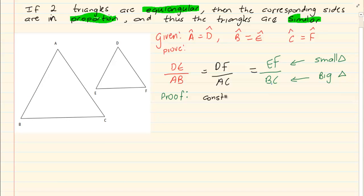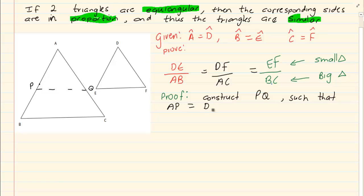How do we go about proving this? First you are going to construct line PQ such that AP must equal DE and AQ must equal DF. So I'm going to construct this line PQ and make it such that AP is equal to DE and AQ is equal to DF. When doing the construction we're trying to get a similar triangle.